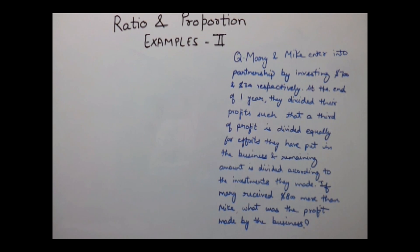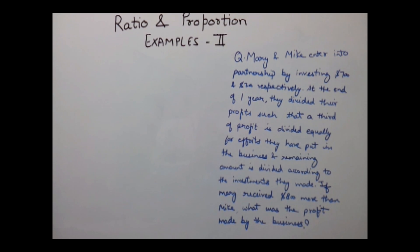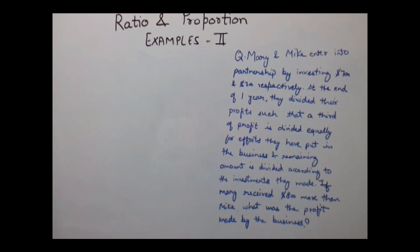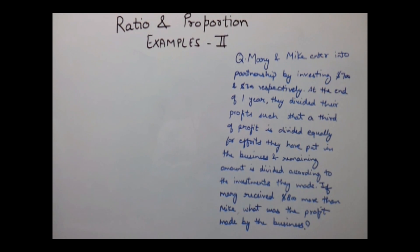Today we will discuss some more examples on Ratio and Proportion. The first question is: Mary and Mike enter into partnership by investing $700 and $300 respectively.